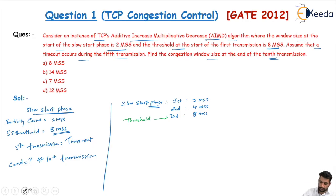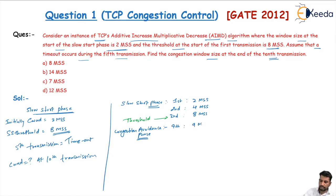The congestion avoidance phase starts here. Additive increment is applied, so the fourth transmission has a congestion window of 9 MSS and the fifth transmission has a window of 10 MSS. But here, a timeout occurs, indicating high congestion in the network.